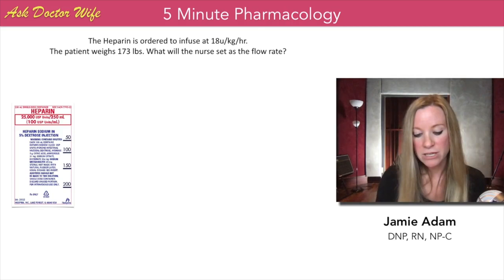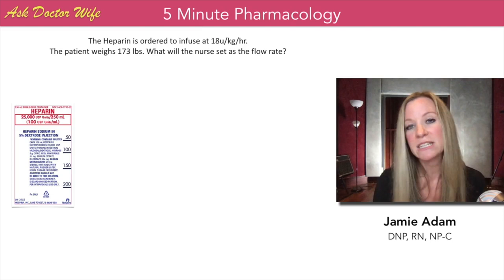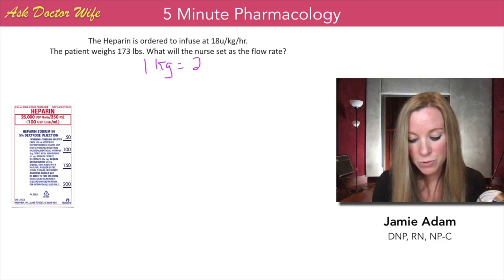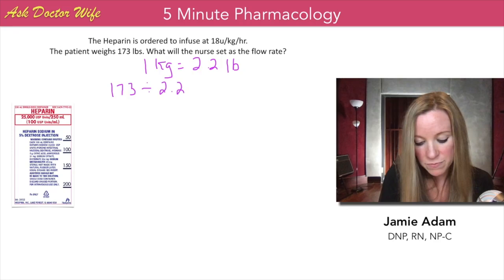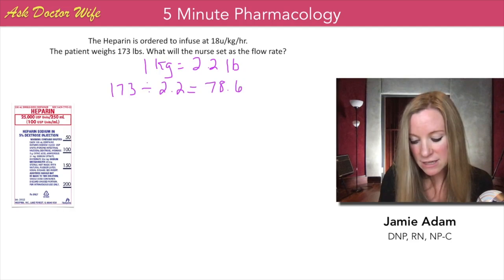To convert pounds to kilograms, we need to remember that conversion — you have to memorize it. One kilogram is equal to 2.2 pounds. So in this case, to find the patient's weight in kilograms, we're going to take 173 divided by 2.2, which equals 78.6 kilograms.